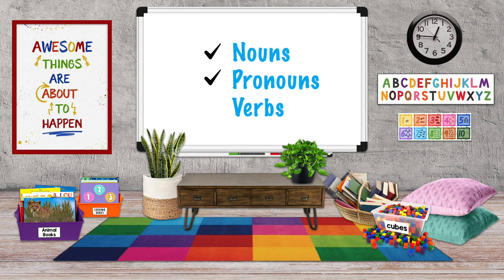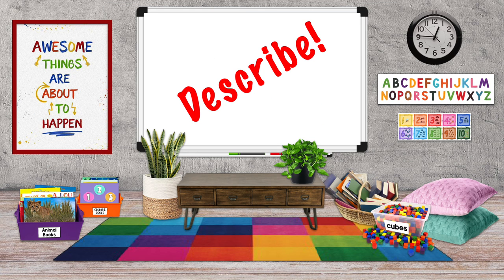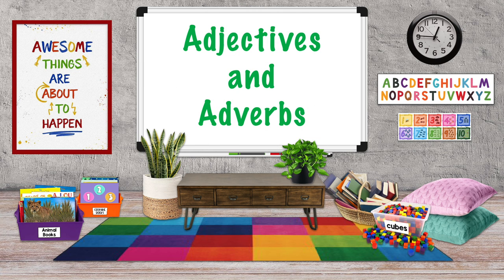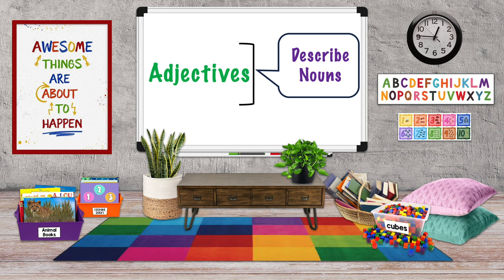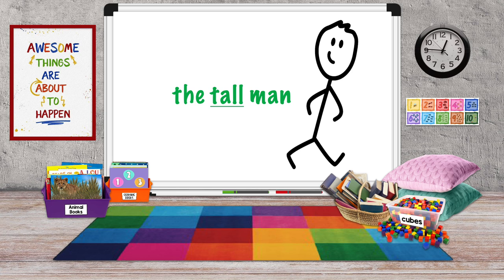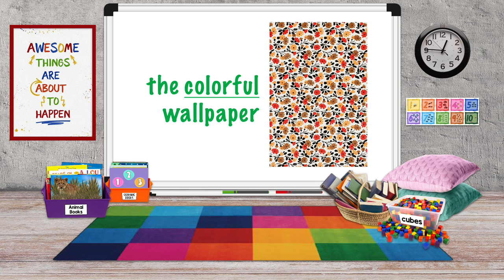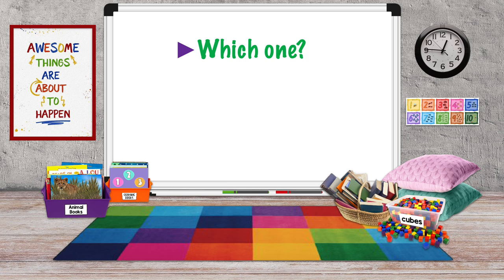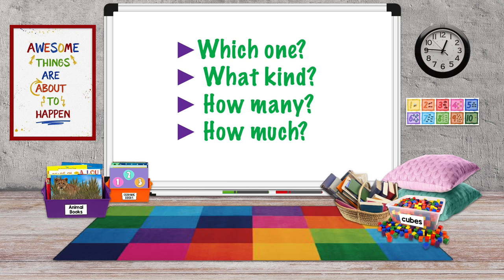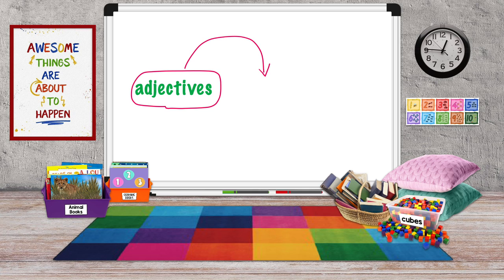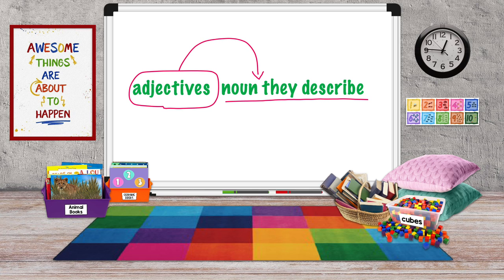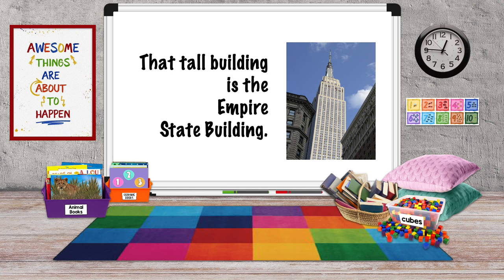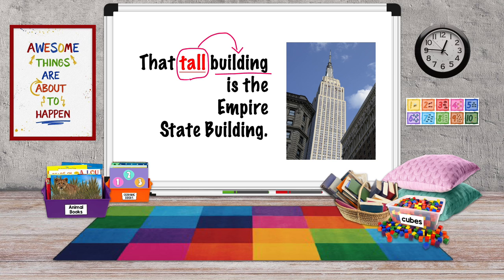We've done nouns, pronouns, and verbs. English also allows us to describe how things are or how they act. Adjectives and adverbs are describing words. Adjectives are words that describe nouns: the tall man, the mysterious secret, the colorful wallpaper. Tall, mysterious, and colorful are all adjectives. Adjectives tell something about a noun. They generally answer the questions which one, what kind, how many, or how much. Adjectives usually come right before or almost before the noun they describe. That tall building is the Empire State Building — our adjective is tall, and it comes before the word it describes: building.